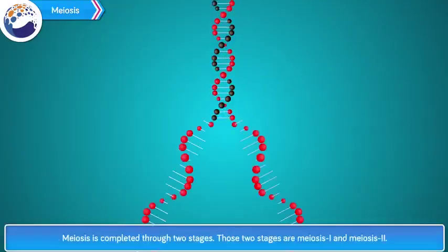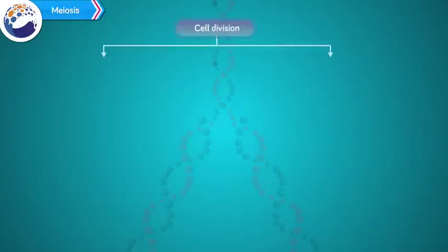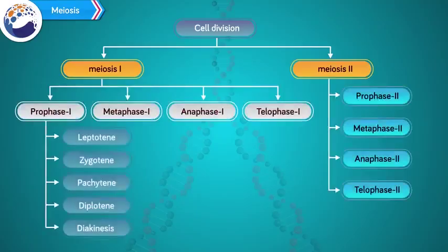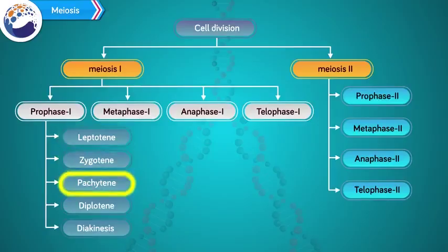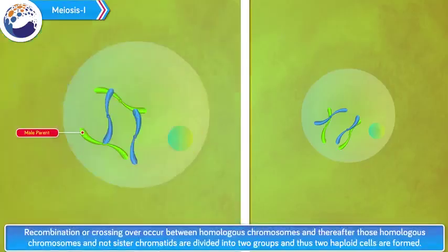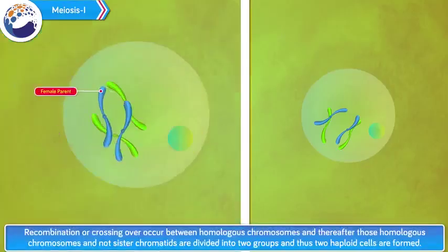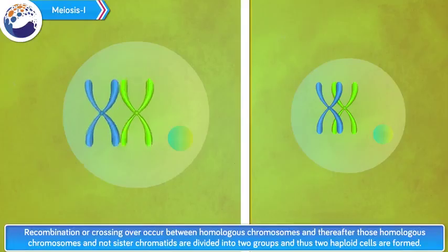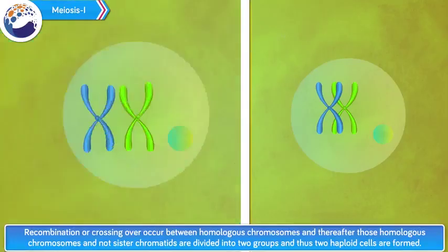Meiosis is completed through two stages: meiosis 1 and meiosis 2. Meiosis 1 comprises four stages — prophase 1, which further comprises leptotene, zygotene, pachytene, diplotene, and diakinesis — then metaphase 1, anaphase 1, and telophase 1. In meiosis 1, recombination or crossing over occurs between homologous chromosomes. Thereafter, those homologous chromosomes are divided into two groups and two haploid cells are formed.